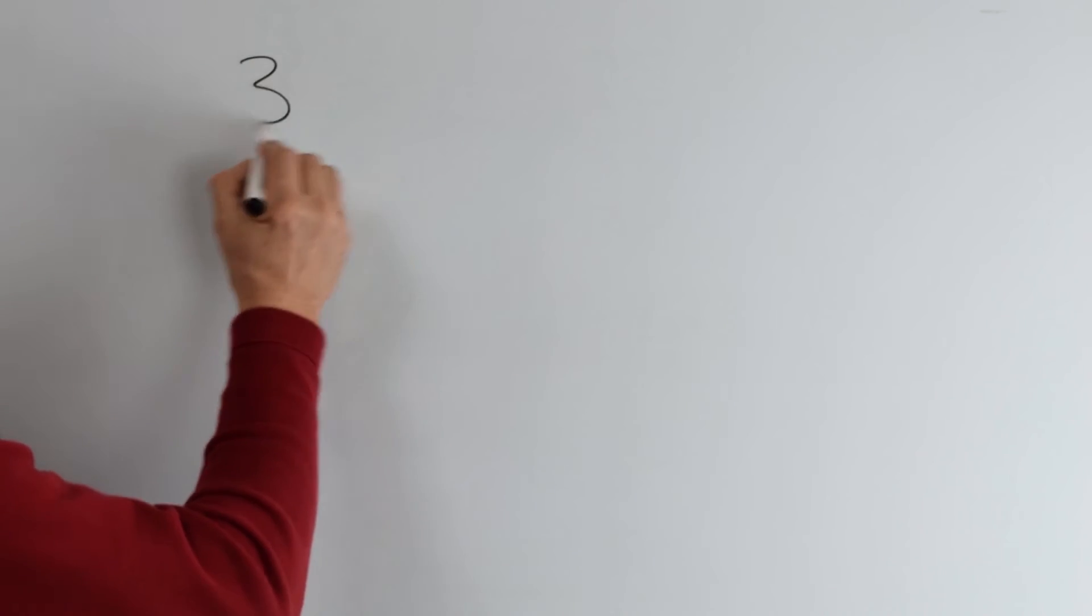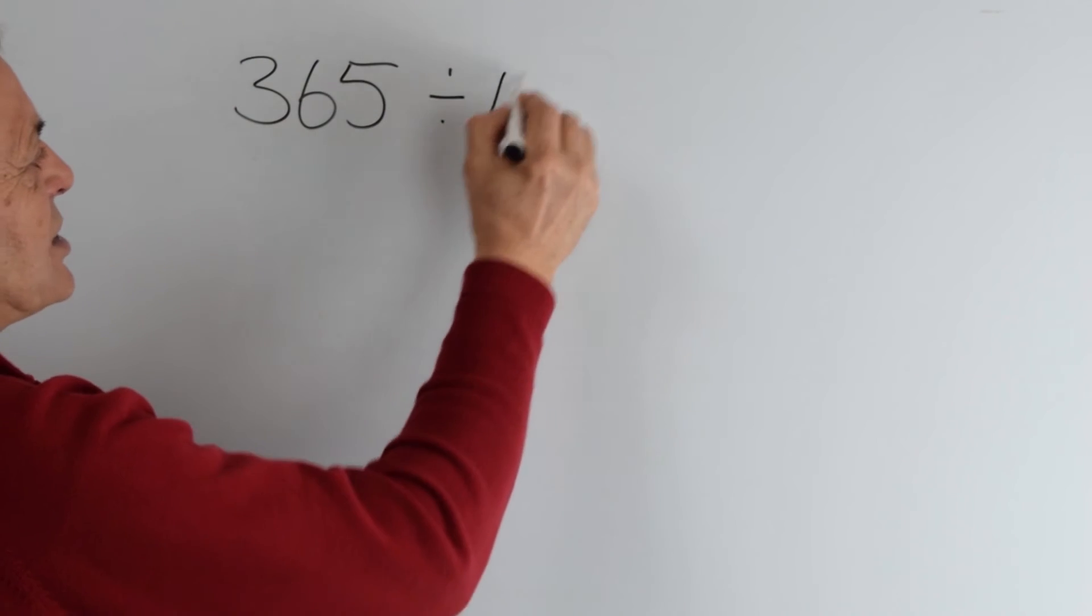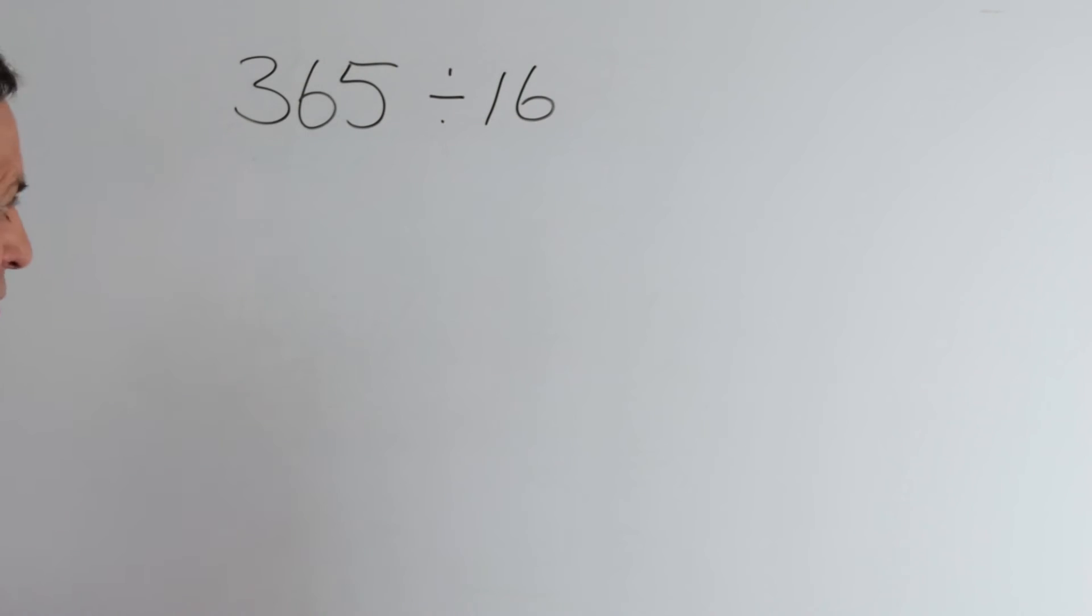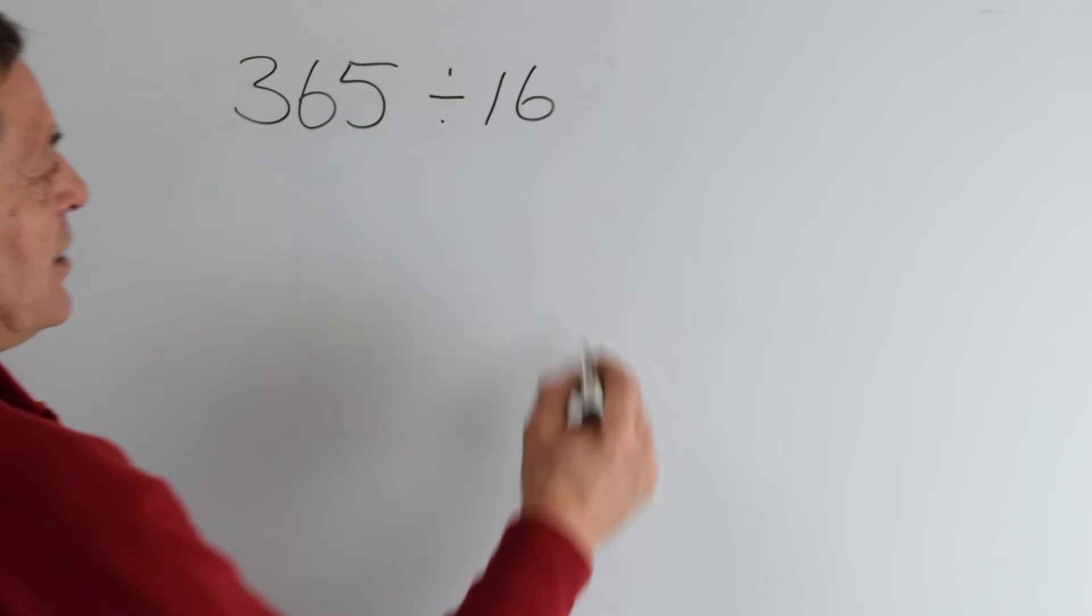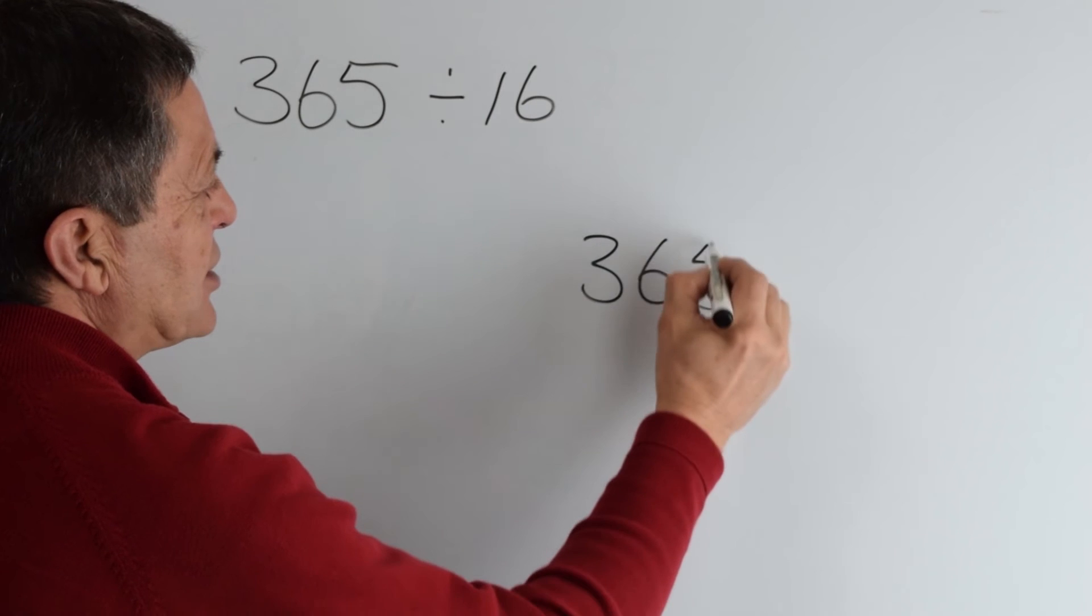So that was a simple division sum. What about a more complicated one? Take the number 365 divided by 16. Quite a difficult division sum. So we write down the number to chunk it up, 365.